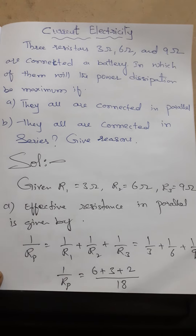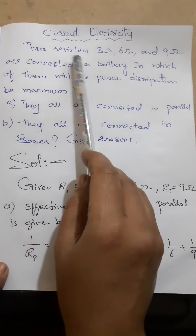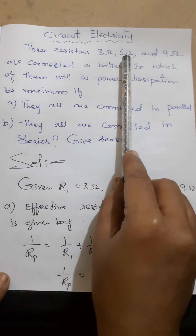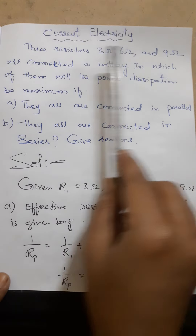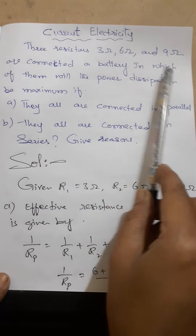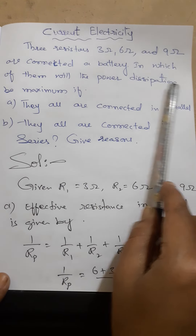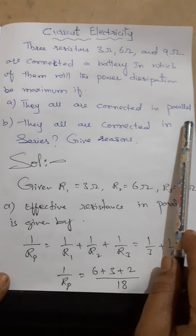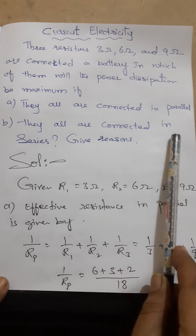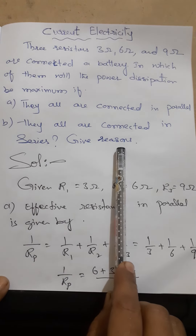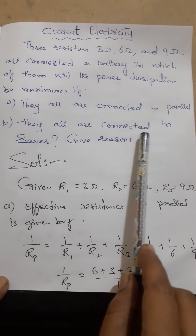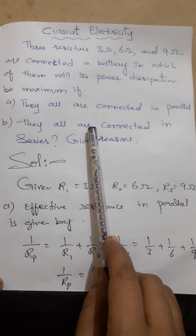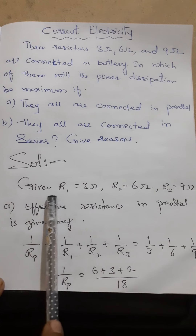Good morning friends. Today I'm going to explain the current electricity problem. There are three resistors — 3 ohms, 6 ohms, and 9 ohms — connected to a battery. In which of them will the power dissipation be maximum? They are connected in parallel and also in series. Give the reason in which the power dissipation is maximum and in which it is minimum.